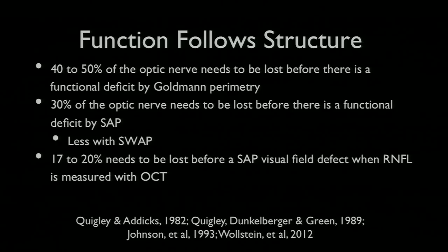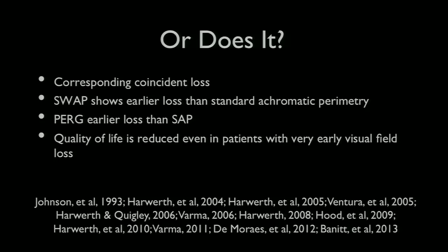Less needs to be lost in order to detect a short wavelength automated perimetry defect. But is it true that structural change precedes functional change always?